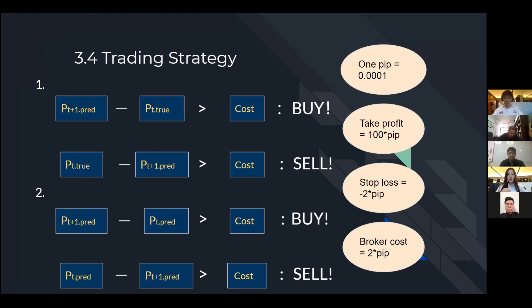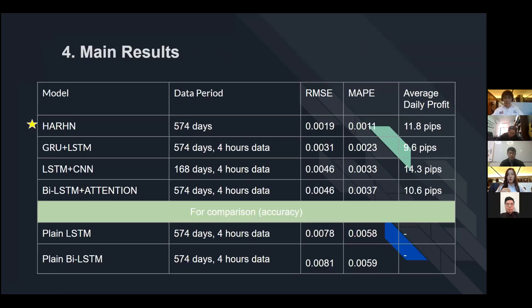We summarize the results of these four models. All the four models are regression models. Thus, we use RMSE and MAPE as the evaluation metrics. We can see that the hierarchical attention-based recurrent highway network performs the best with the lowest RMSE and MAPE. Also, the results of vanilla LSTM and bi-LSTM are shown for comparison. The results are much worse than LSTM combined with GRU or CNN and also bi-LSTM plus attention. This concludes that the combination of two models and adding a self-attention layer can improve the accuracy rather than the plain model.